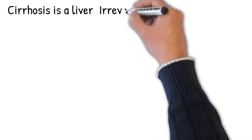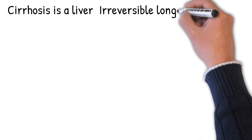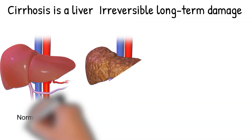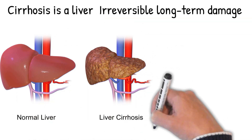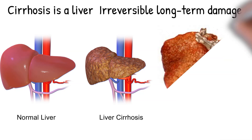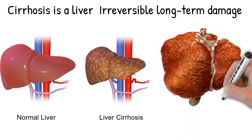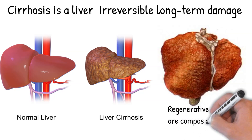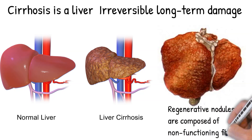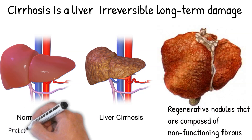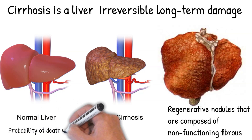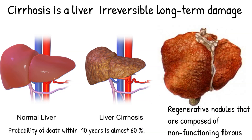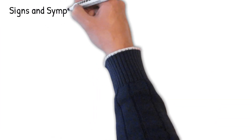Cirrhosis is irreversible long-term damage to the liver. Normal liver tissue is replaced by scar tissue, which is called diffuse fibrosis of the liver. Liver cells, hepatocytes, don't regenerate properly after recurrent damage, and they create regenerative nodules composed of non-functioning fibrous tissue. The disease develops slowly over months or years. If cirrhosis is already developed, the probability of death within 10 years is almost 60%. Cirrhosis caused by alcohol abuse is more aggressive.